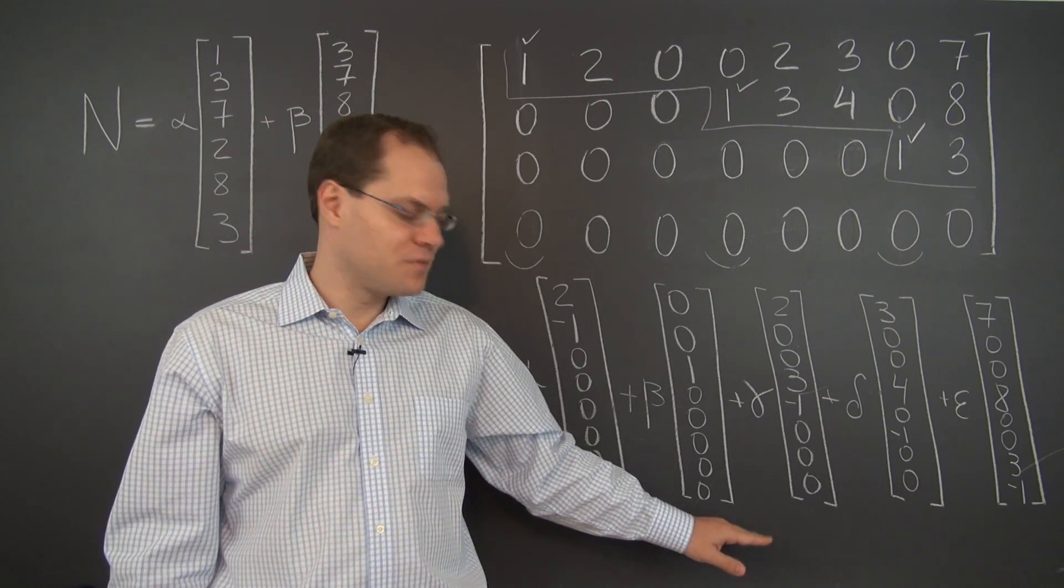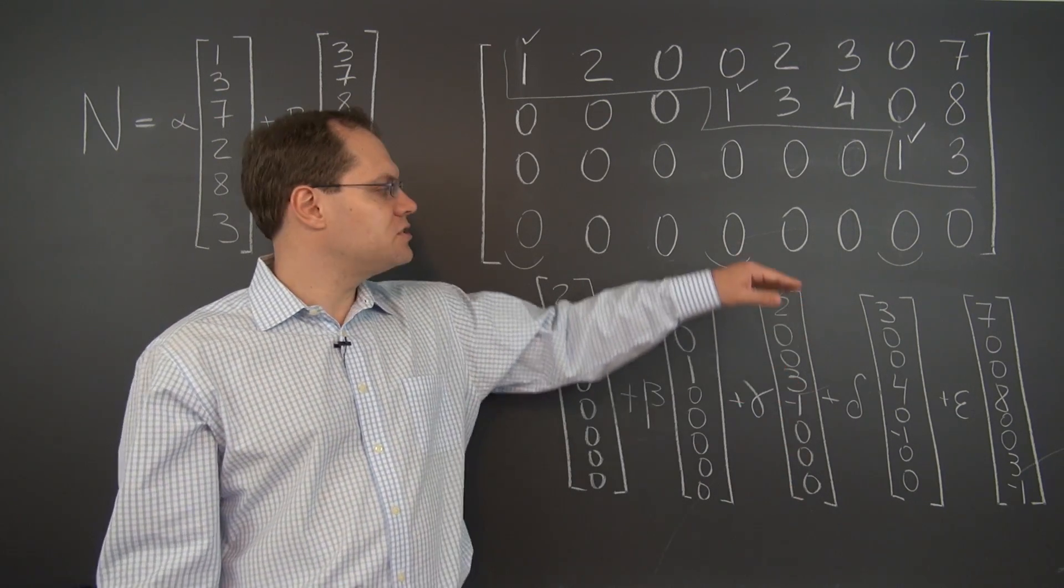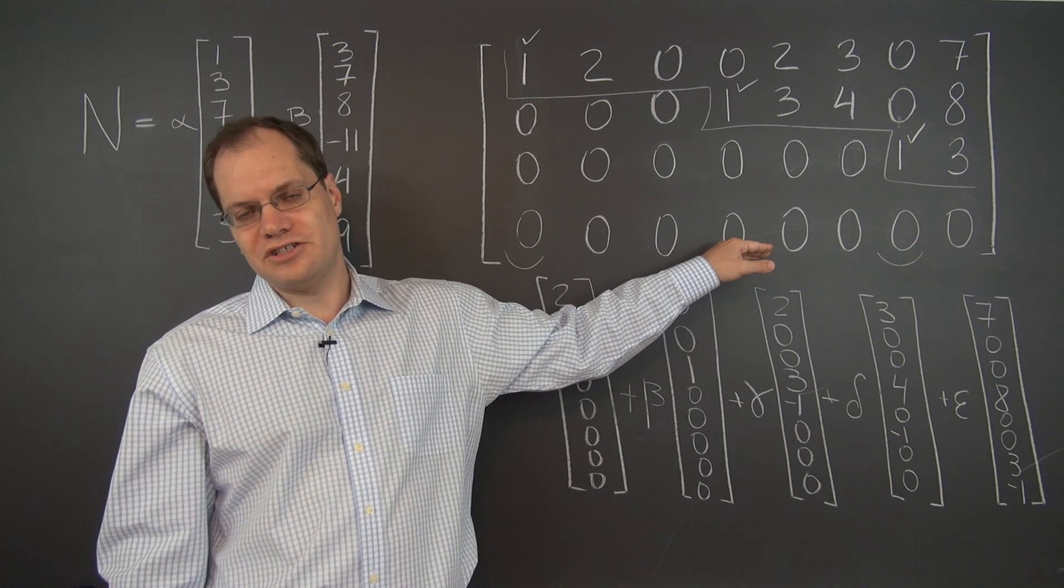But can we go back? If we know the null space, if we're given the null space, can we determine the row reduced echelon form?